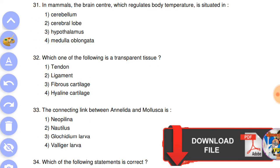Number 31: in mammals, the brain center which regulates body temperature is situated in answer is the third, hypothalamus. Next question: which one of the following is the transparent tissue? Answer is the fourth, hyaline cartilage.